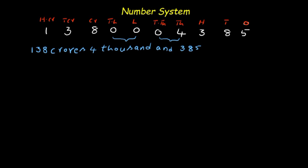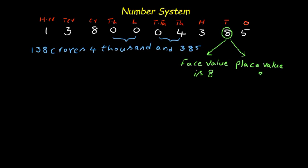Now we will discuss face values and place values in the Indian system. The face value of this digit is 8. The place value — 8 is in the tens place — so it is eight tens, which is eighty. The face value of this other 8 is also 8, but the place value is different — this 8 is in the crores place, so its place value is 8 crores.